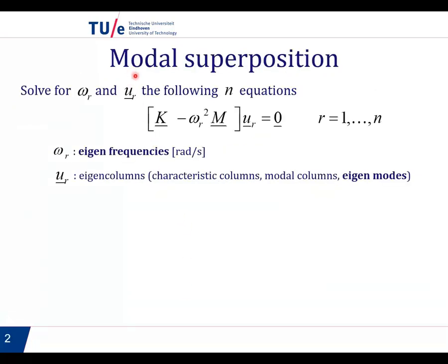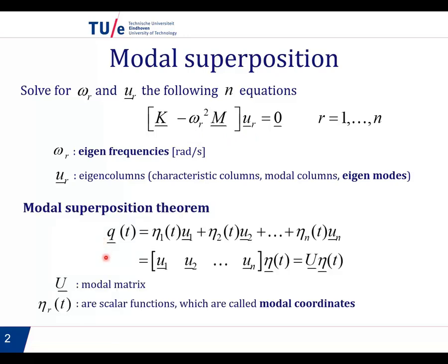To apply modal superposition, to define modal superposition, we need to recall that we solve the eigenvalue problem to obtain the eigenfrequencies of the system and the corresponding eigenmodes. Modal superposition says that we can write the generalized coordinates q as a sum of some factors, scalar functions that depend on time, multiplied by the eigenvectors.